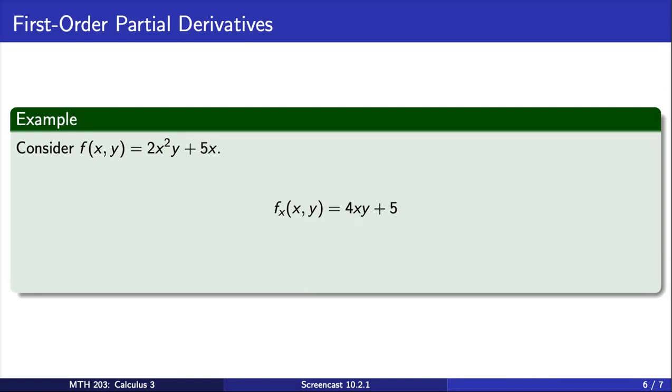Similarly, to obtain the first partial derivative of f with respect to y, we treat x as constant and take the derivative of the expression with respect to y. This gives us this partial derivative. Note that the derivative of the term 5x in the function f is equal to 0 since we are treating x as constant.